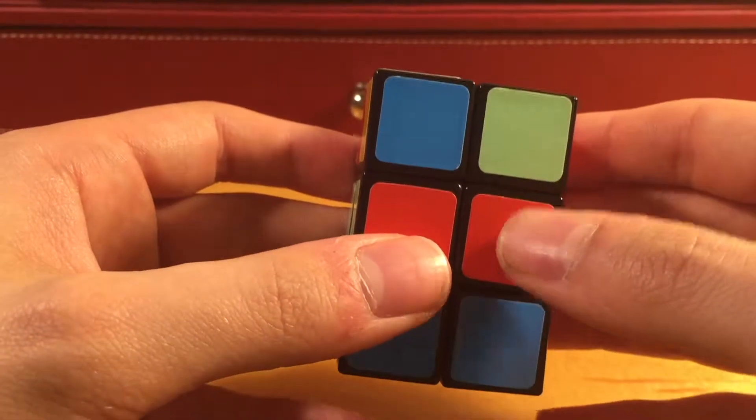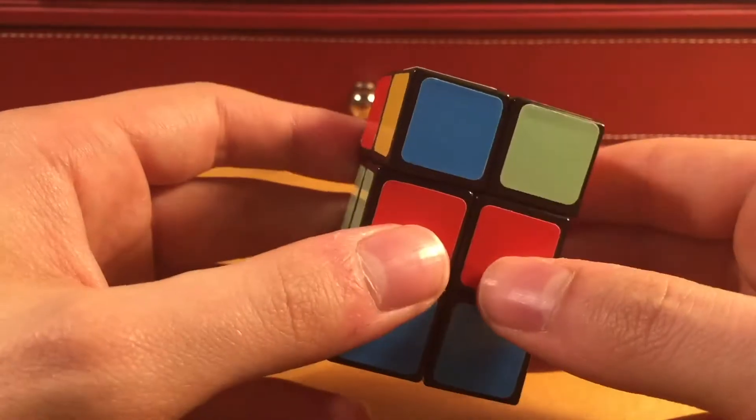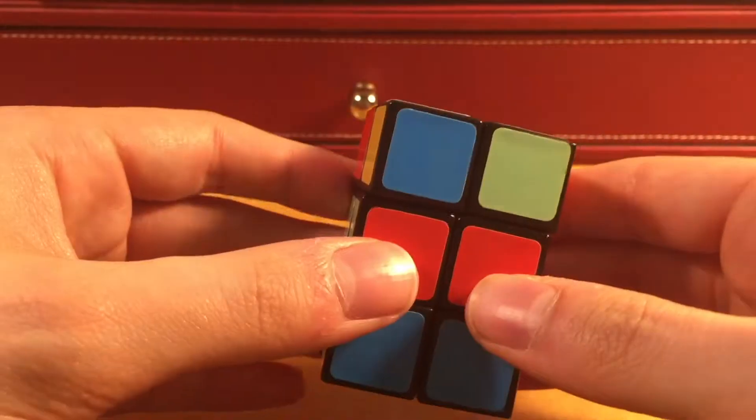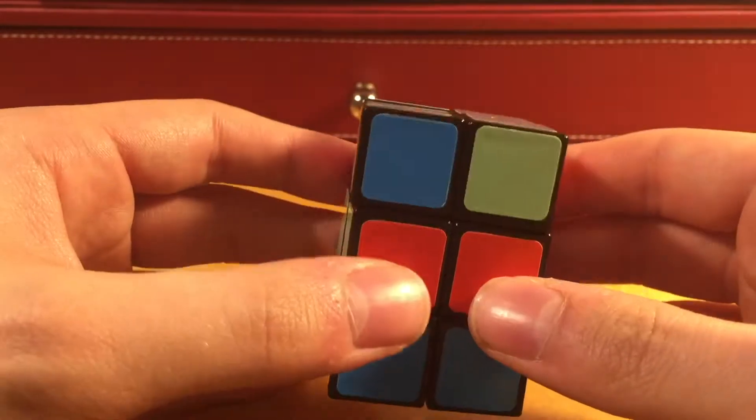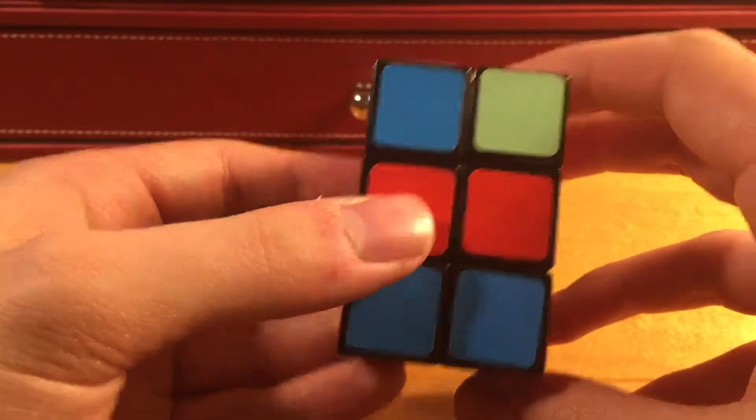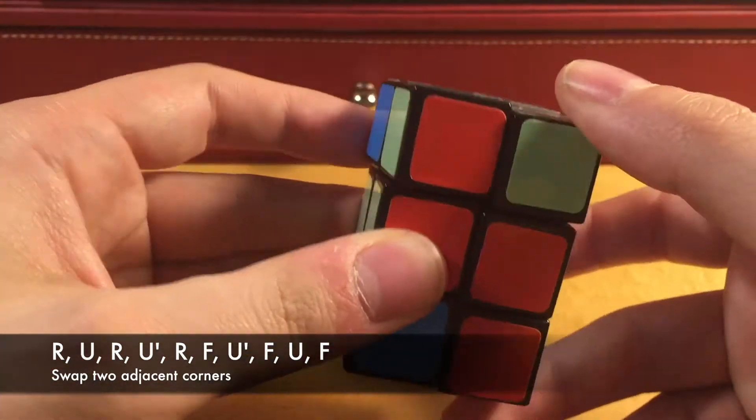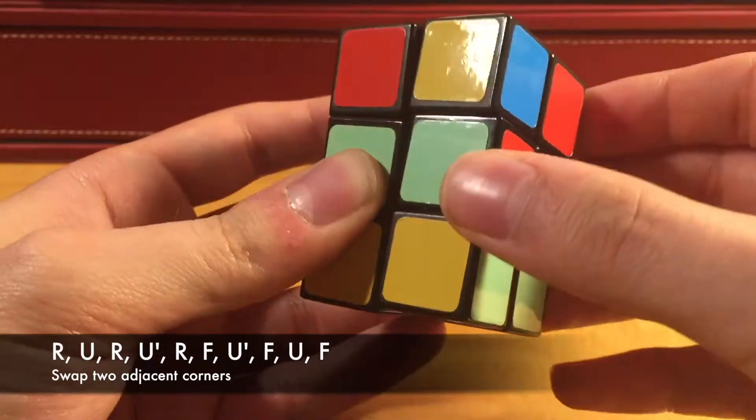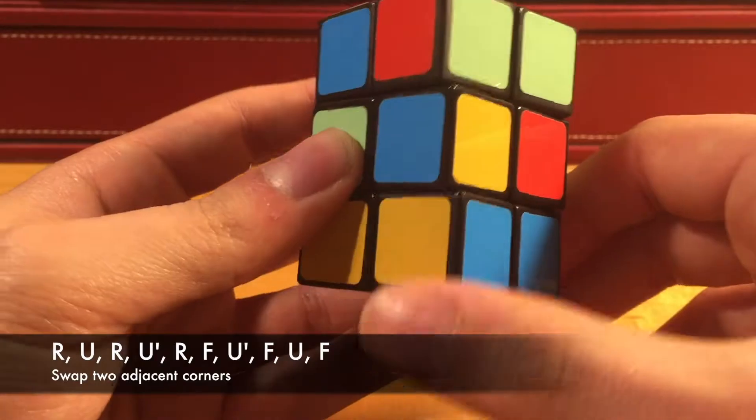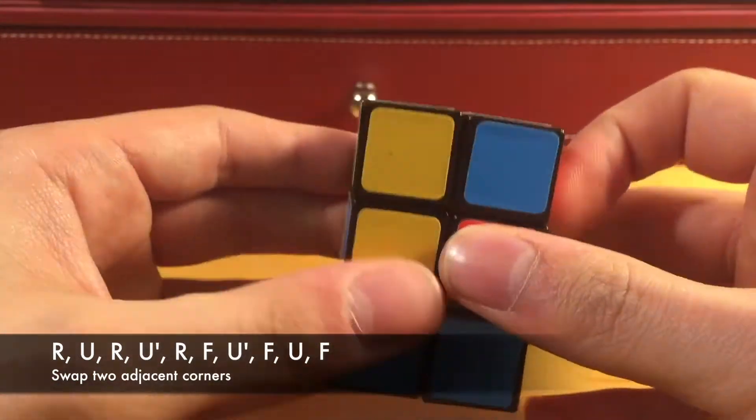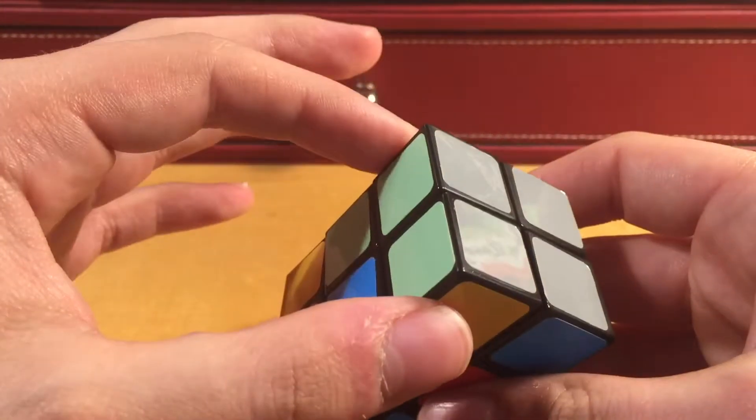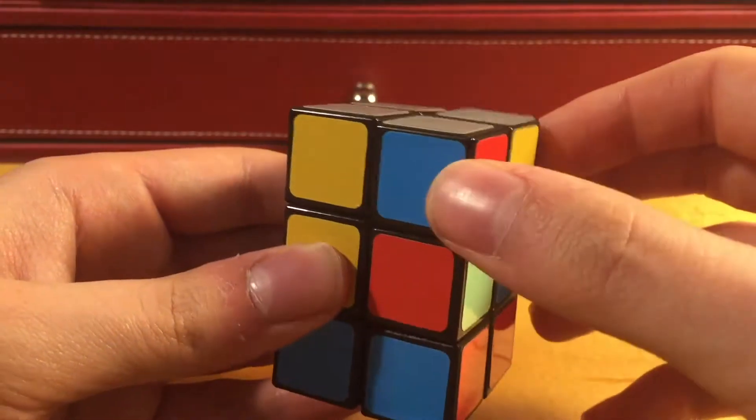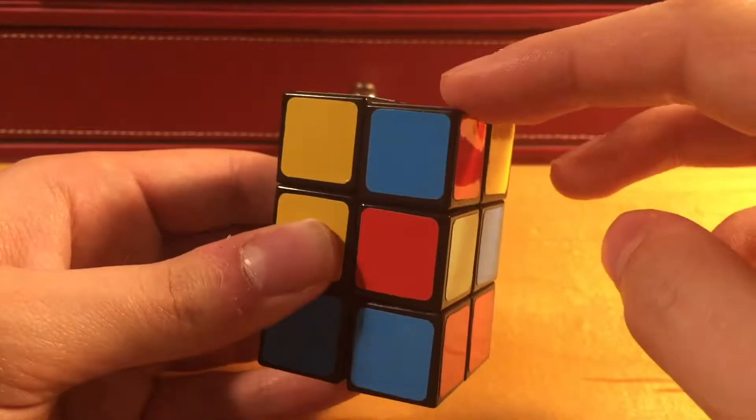So, from here, you're going to want to do the following moves. R U R U' R F U' F U F. And that swaps two of the corners. You can see that these two corners got swapped, and these two are now the only ones that remain incorrect.